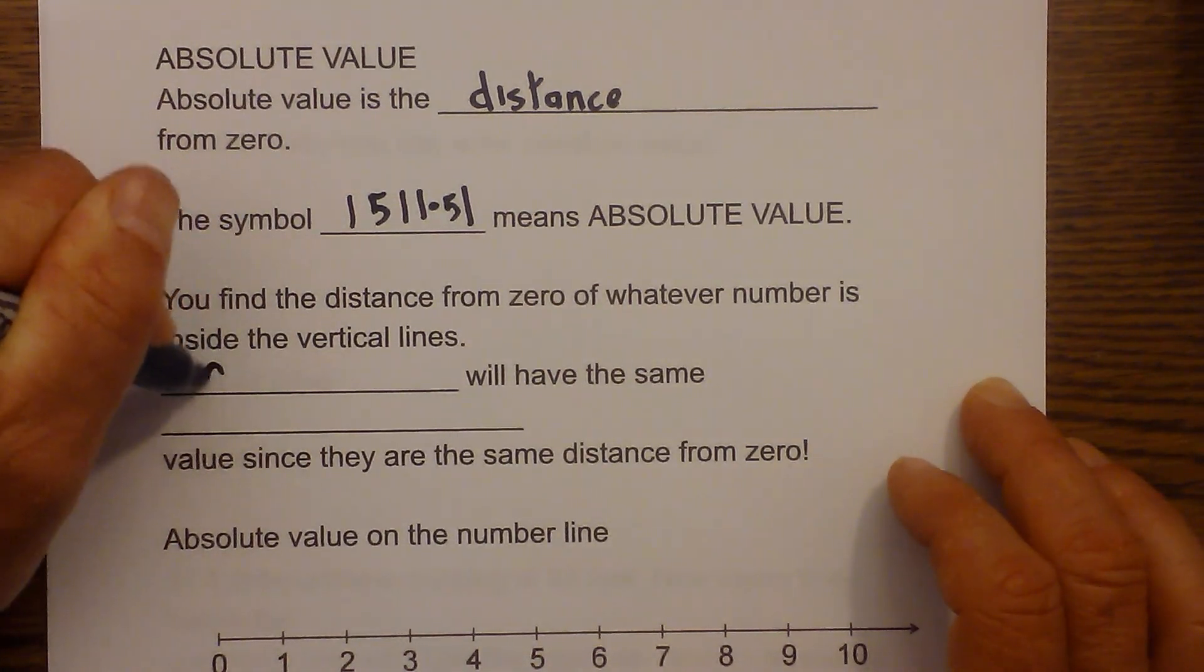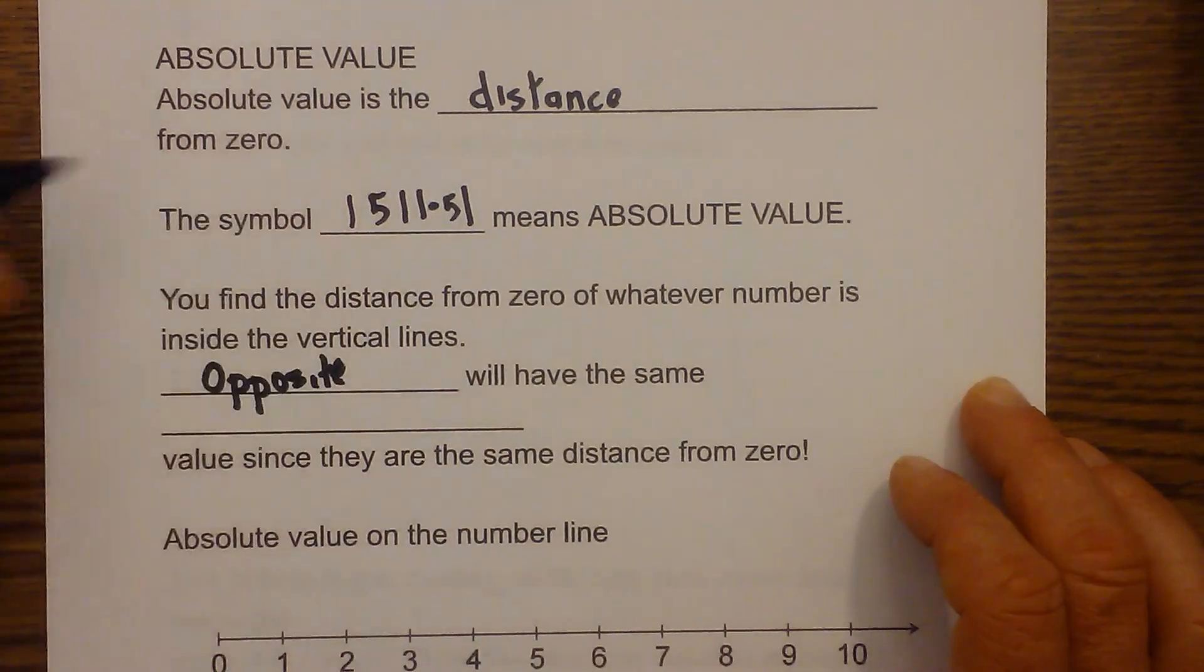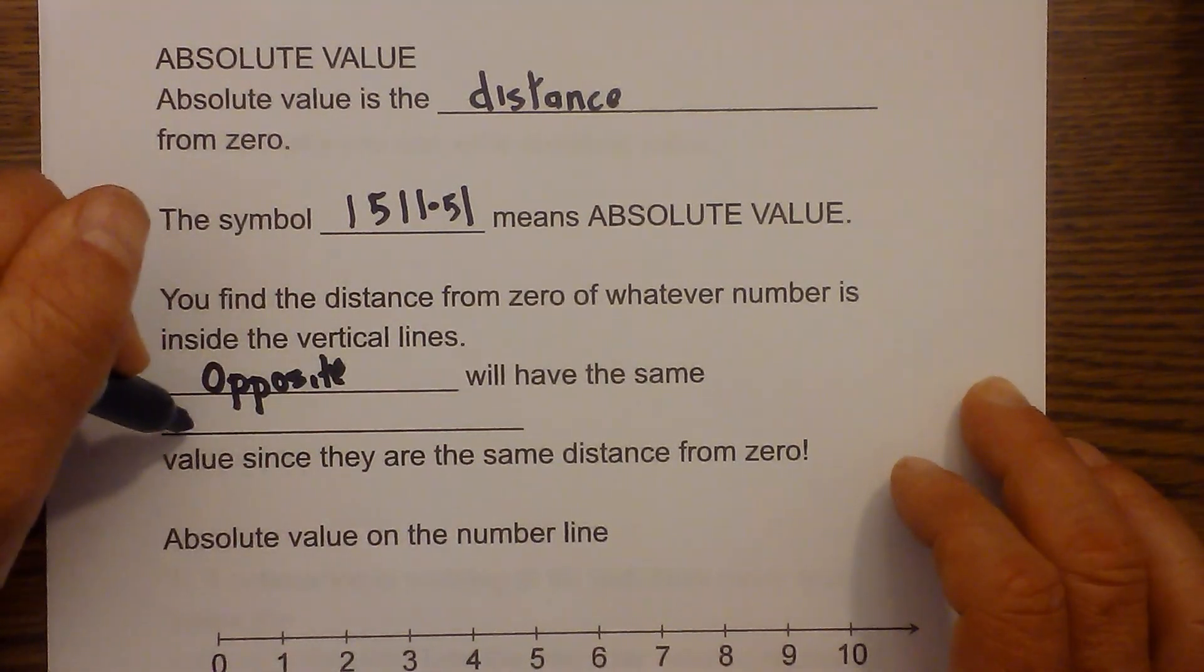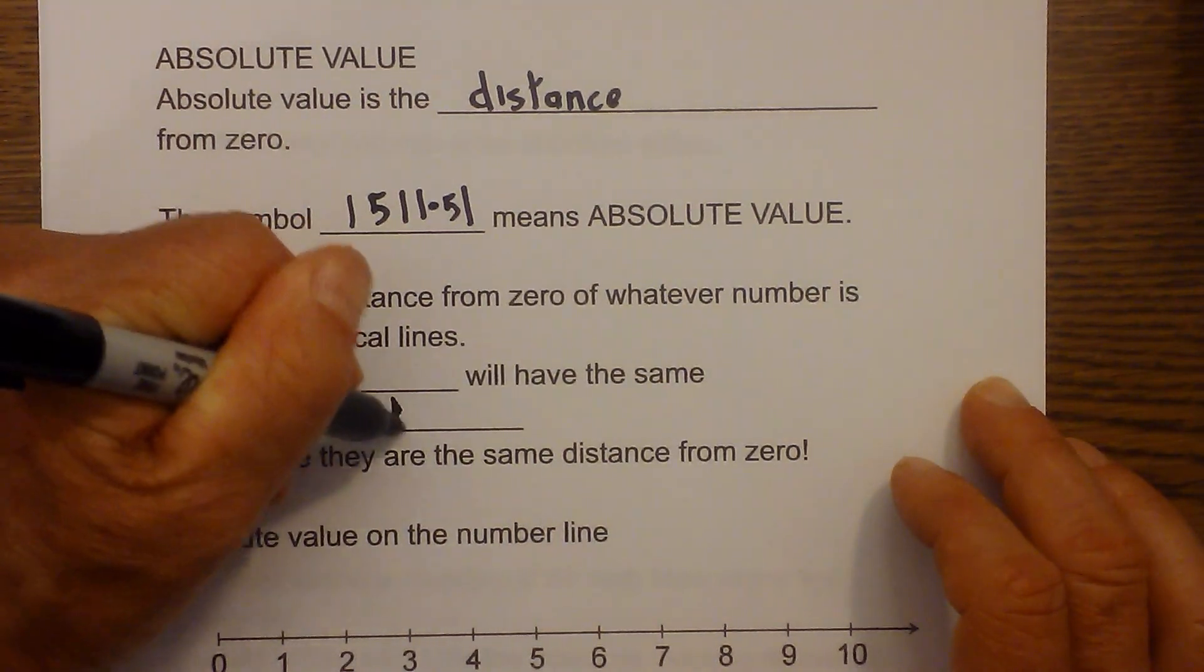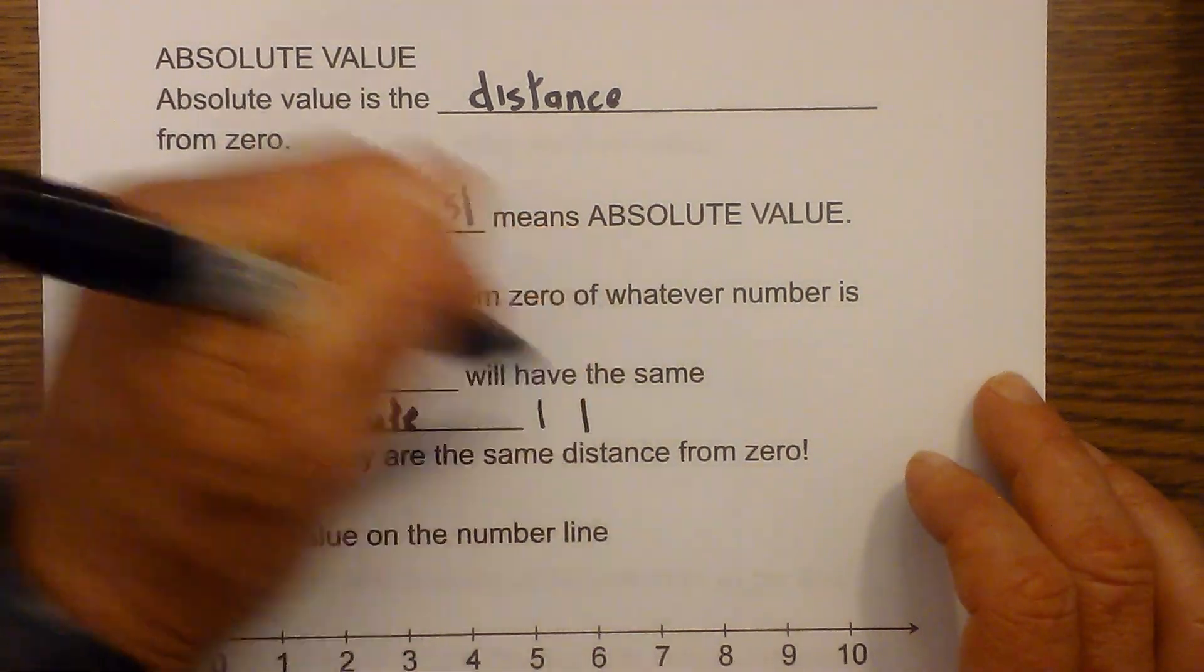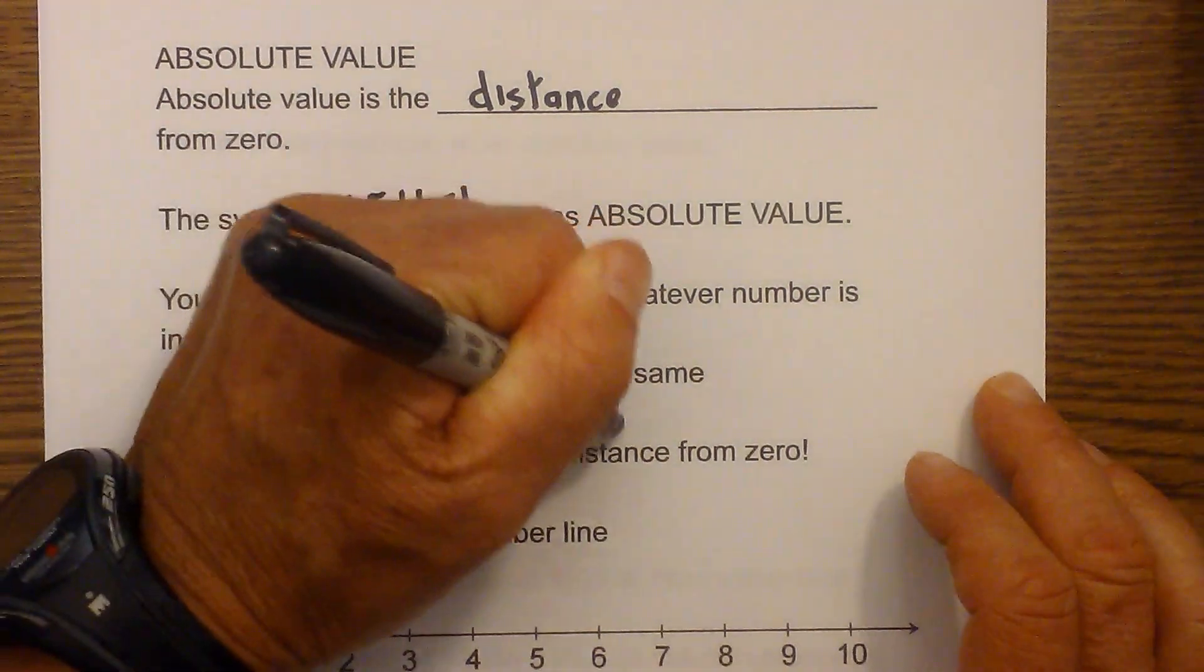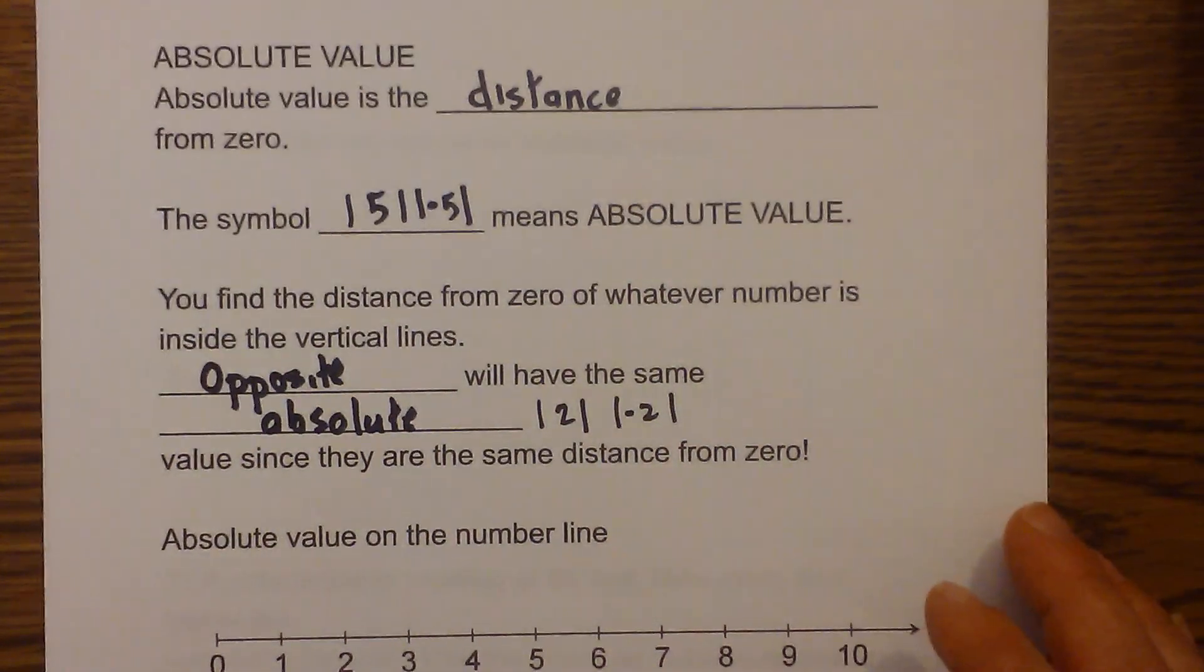Now whenever you have opposites like 5 and negative 5, they always have the same absolute value. So 5 and negative 5 have the same absolute value. Here are the two symbols. We have 2 and negative 2. So both of them will have an absolute value of 2.